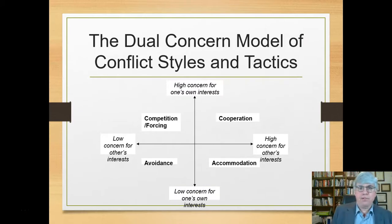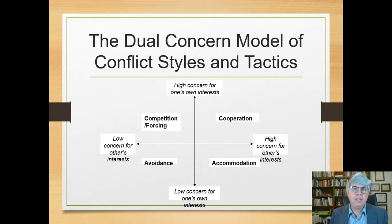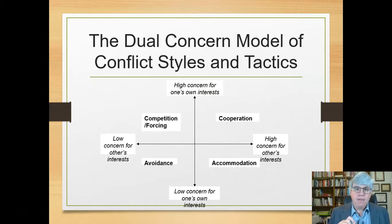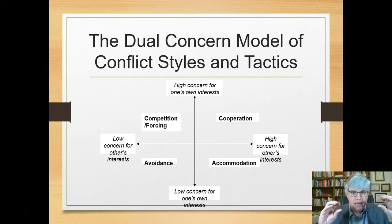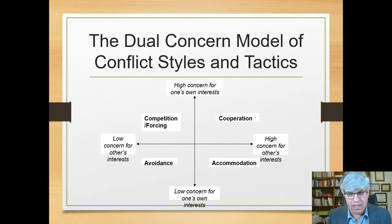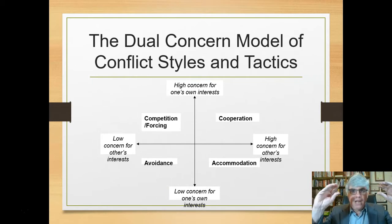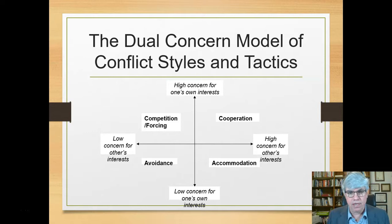Here we have a graph that is the basic description of the dual concern model. Dual concern means there are two sets of concerns. The first is the vertical axis going up and down. On the top half of the grid, there's a high concern for one's own interests — the things that matter to me. Or down below, I can have a low concern for my own interests — that's not very important. I can have a high or low concern for my own interests.